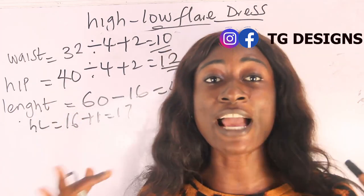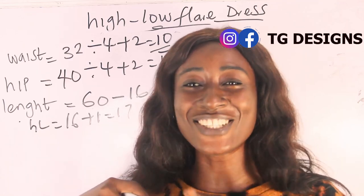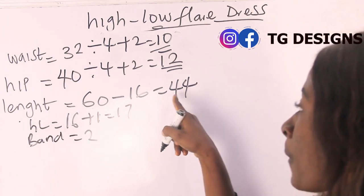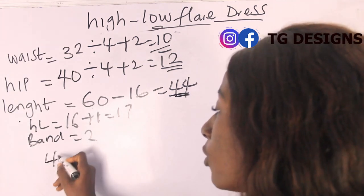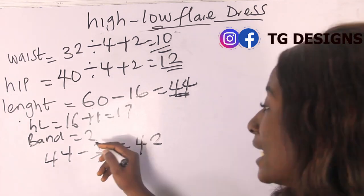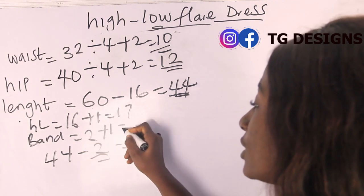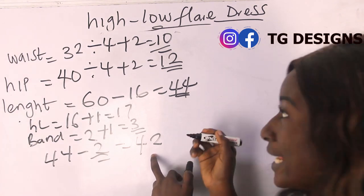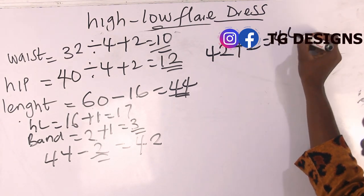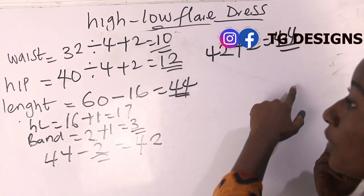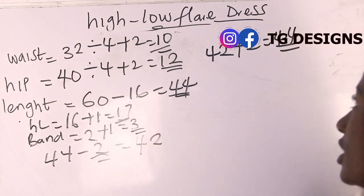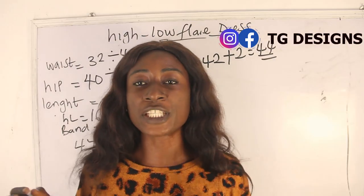The wideness of your band depends on you — you can make it two, three, or four inches high. Deduct the band width from your length. My band is two inches, so 44 minus 2 gives 42 inches. The band is two inches plus one inch sewing allowance, giving three inches. So our dress length is 42 inches, plus two inches sewing allowance, giving 44 inches.